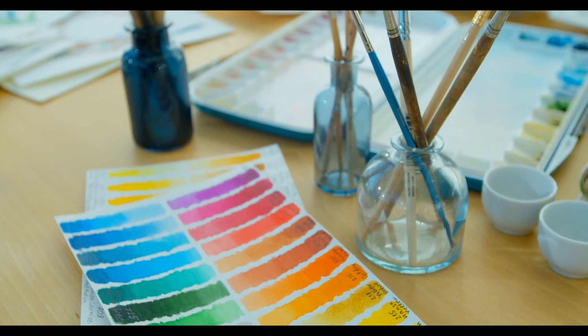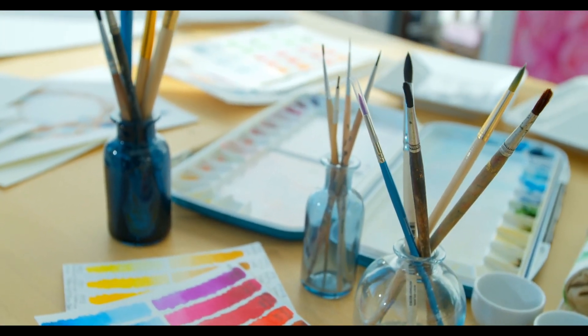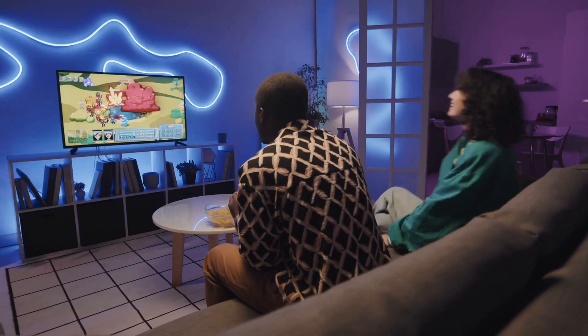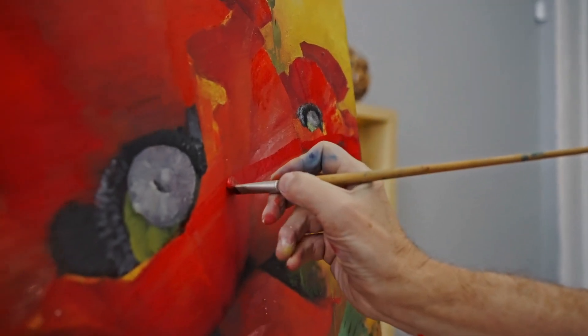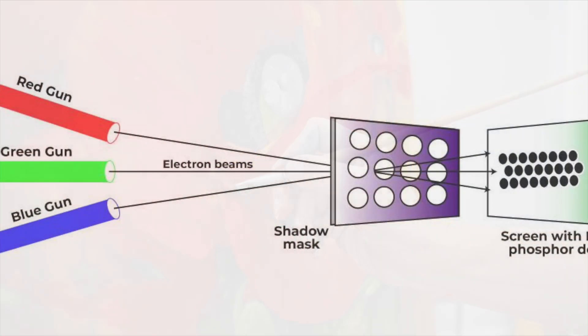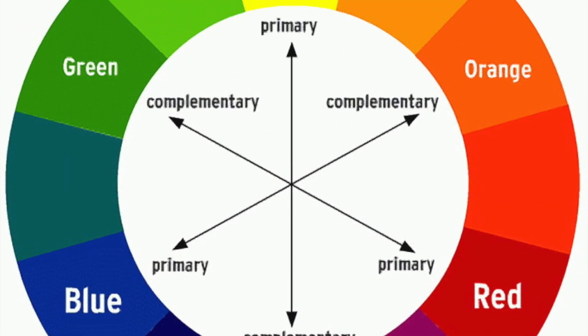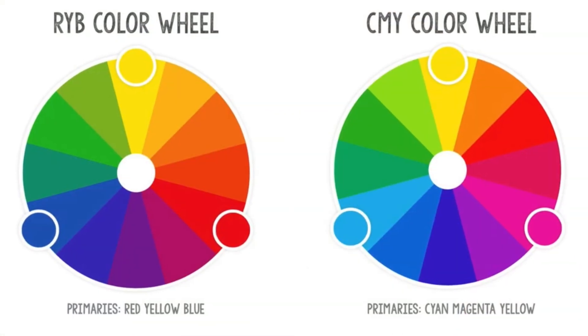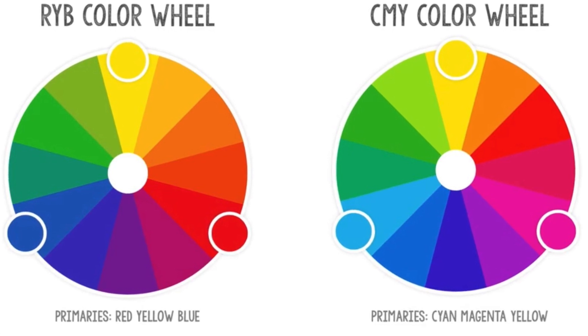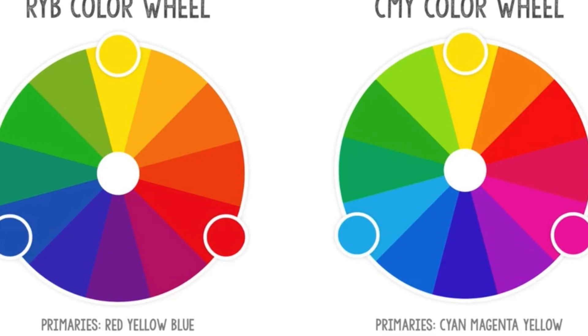Today, our understanding of color theory continues to evolve with advances in both science and technology. In the digital age, the RGB model is more relevant than ever, underpinning the vibrant displays of our devices. Meanwhile, the principles of subtractive color mixing remain fundamental in art and printing, though the CMY model has largely supplanted RYB in professional applications. To summarize, the use of RGB for screens and RYB for traditional color mixing arises from the different ways light and pigments interact to create color. RGB is based on additive color theory, suitable for light-emitting devices, while RYB — and more accurately, CMY — is based on subtractive color theory, suitable for pigments and printing. Each model serves its purpose in its respective domain, allowing us to experience and create a vast array of colors in our everyday lives.